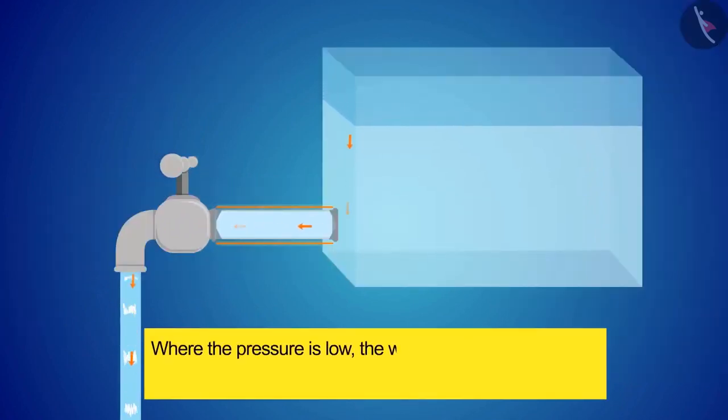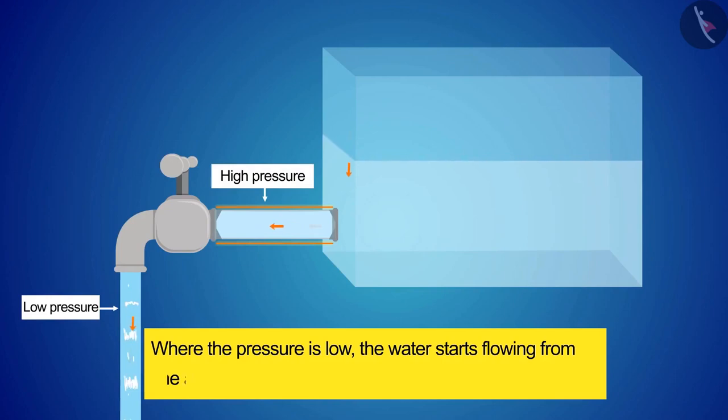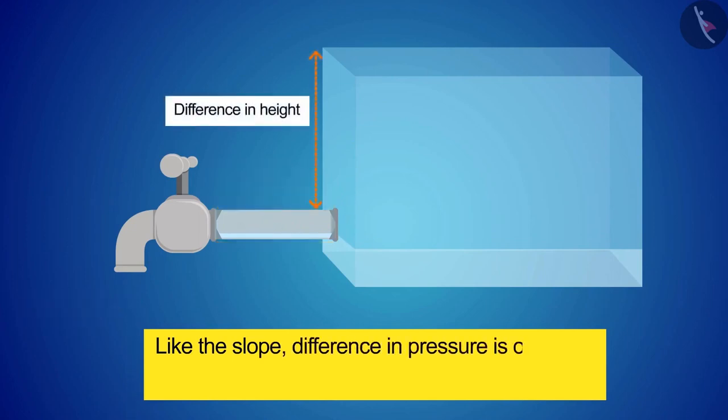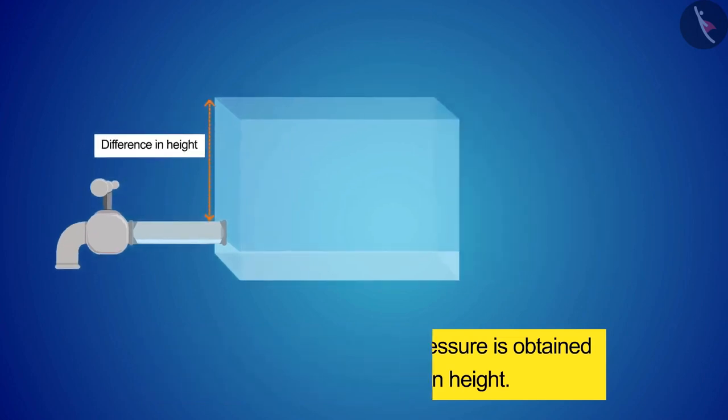The water flows from the area having high pressure to the area having low pressure. Here too, like the slope, difference in pressure is obtained due to difference in height. So we can conclude that to let the water flow, we need a pressure difference.